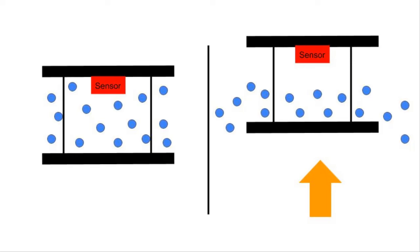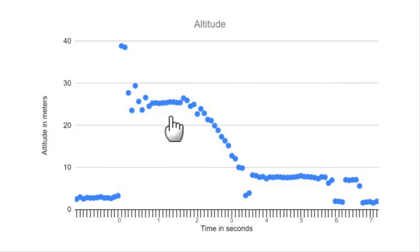The air molecules get forced out, creating a micro vacuum. Since the sensor uses pressure to determine altitude, the sensor sees this micro vacuum and believes that the altitude is higher than it actually is. The likely peak altitude is around 25 meters, just over 80 feet.